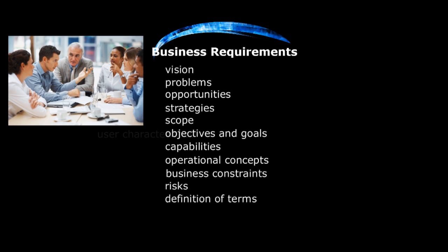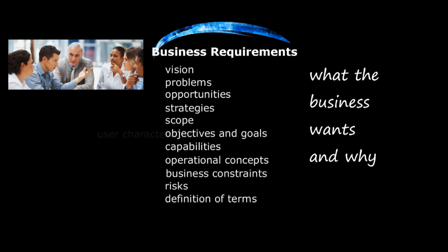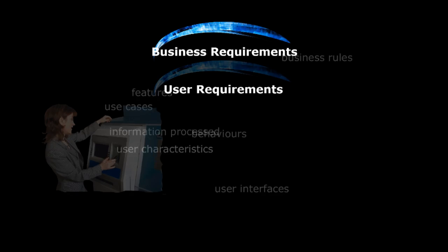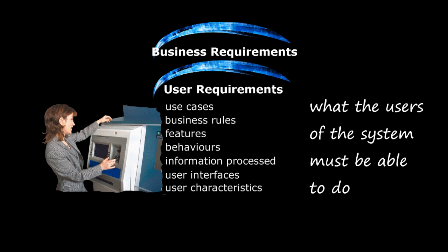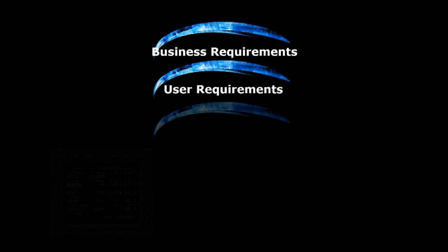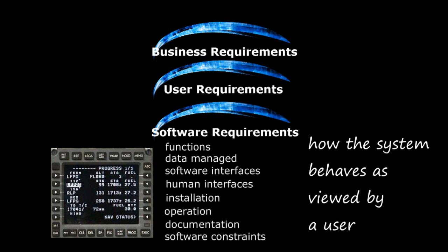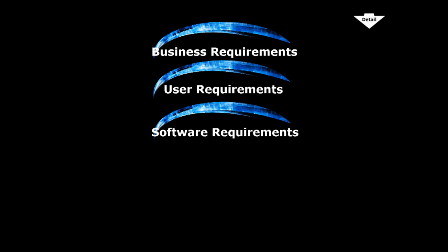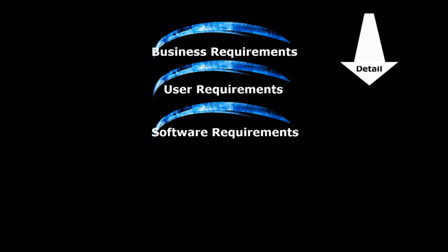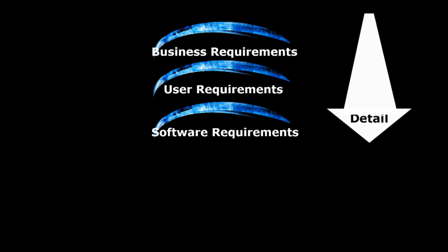Here's a three-layer framework. Business requirements: what the business wants and why. User requirements: what the users of the system must be able to do. And software requirements: how the system behaves as viewed by a user. The upper layers produce a rough sketch of the problem, and each successive layer engages with increasing levels of detail, to the point where our statement of requirement is sufficiently precise to make sure that the machine we build will solve our problem.